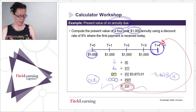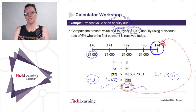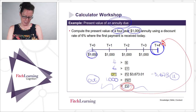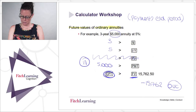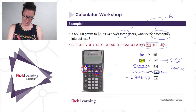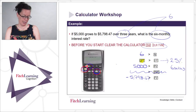One crucial point: in the exam you might do one or two calculations in begin mode, but most will be in end mode. Don't forget you're still in begin mode. Always get into the habit of switching back to end mode when you finish an annuity due calculation. To do that: second payment, then second enter to scroll between begin and end — put yourself back in end mode.